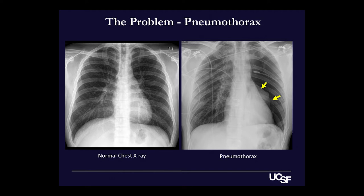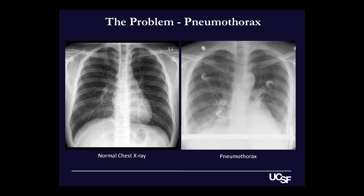Pneumothorax isn't always as obvious as this particular example. Here's another one where you can see that the lung markings don't make it all the way up into the upper right chest. They end at this curved line here, which turns out to be the edge of the lung. In fact, if you look even more carefully, there's another one on the other side that looks pretty similar, but it's a little harder to see.